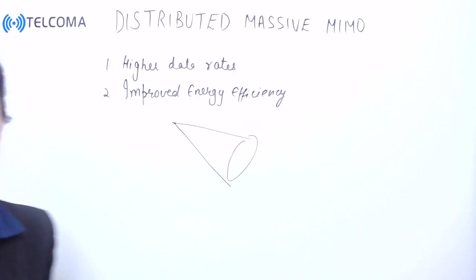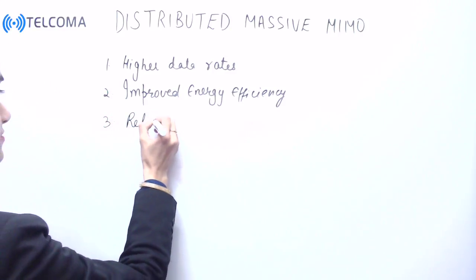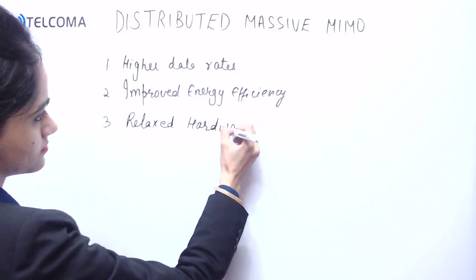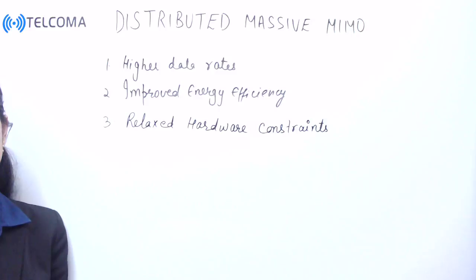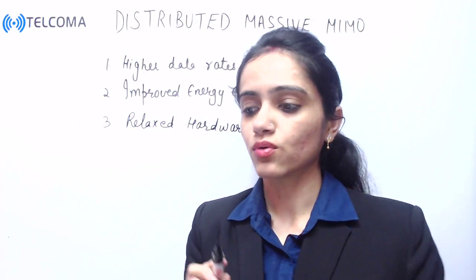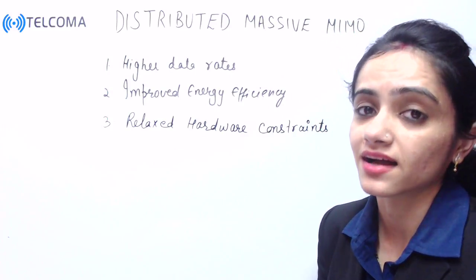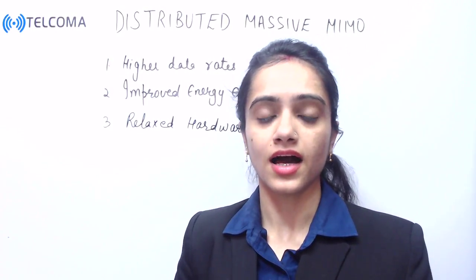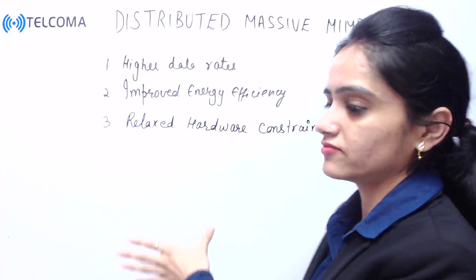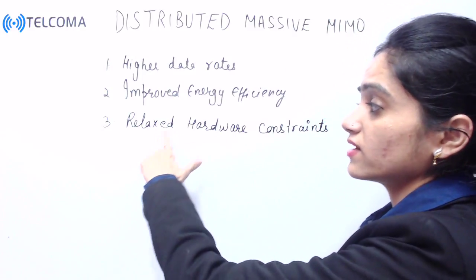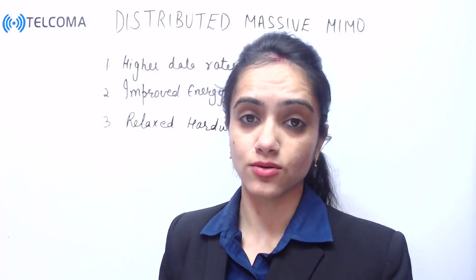Then we have relaxed hardware constraints. In massive MIMO, we deploy low-quality but large numbers of antennas, rather than purchasing extremely high-cost antennas. We focus on low-quality, inexpensive components in the hardware. That is why we have relaxed hardware constraints — we do not need to spend on costly or expensive equipment in our network.